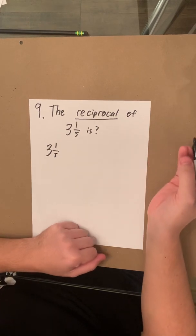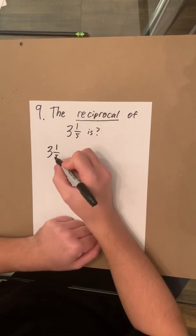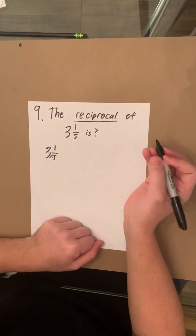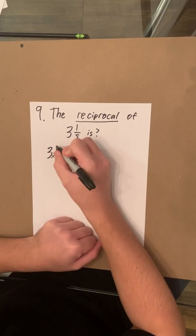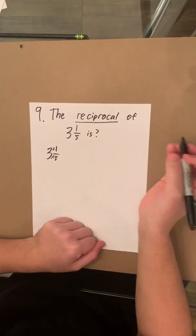So the easiest way to find the improper fraction is to multiply the 3 times the 5 and then add what you get there to this 1. So I'll show you what I mean by that.